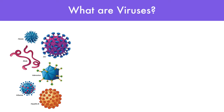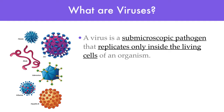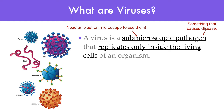So what is a virus? Viruses are sub-microscopic pathogens that can replicate only inside the living cells of an organism. They're sub-microscopic, which means they cannot be seen with a regular microscope. In order to view a virus, we need to use a special type of microscope called an electron microscope. And they're pathogens, which means they are something that causes disease.